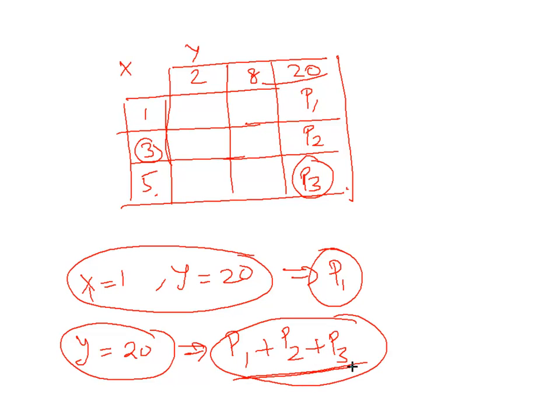Note that this is your unconditional probability. Probability of Y becoming 20. Here it does not matter what is the value of X. X can be anything 1, 3, and 5. We are saying that we are interested only in the probability of Y being 20 which will be the sum of this.